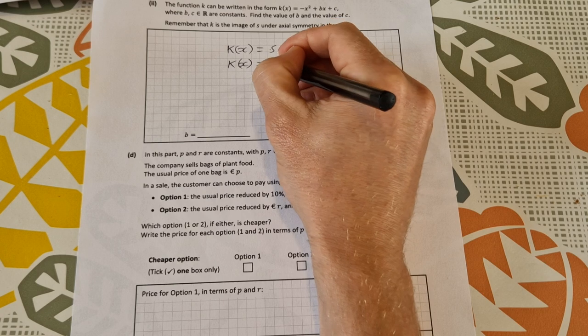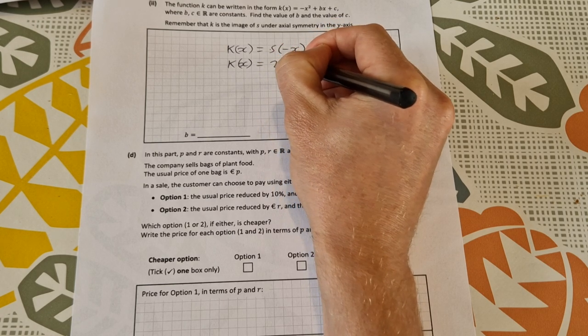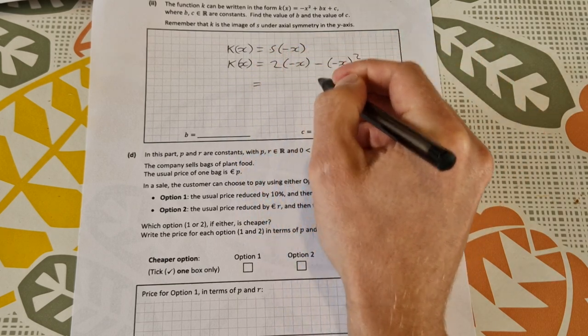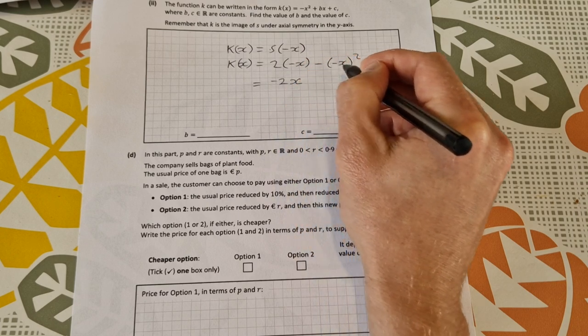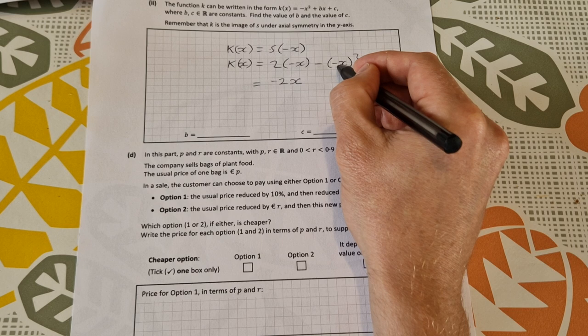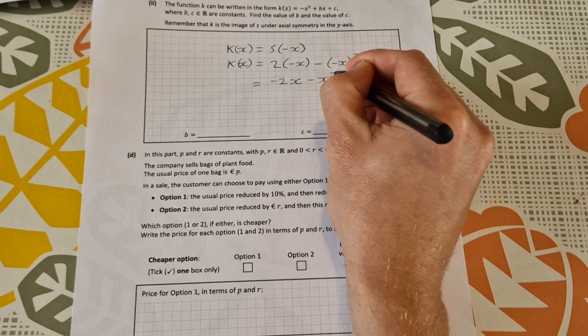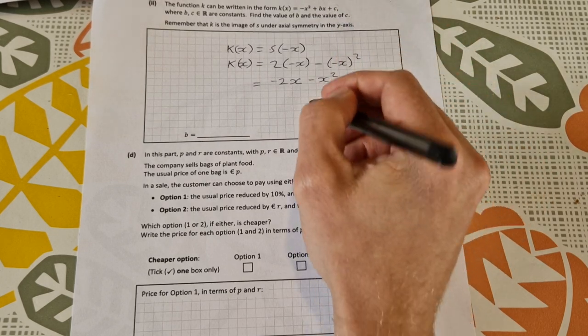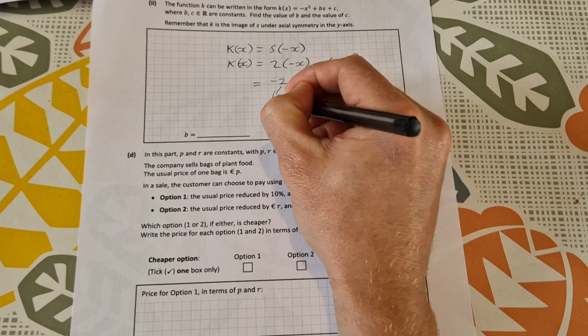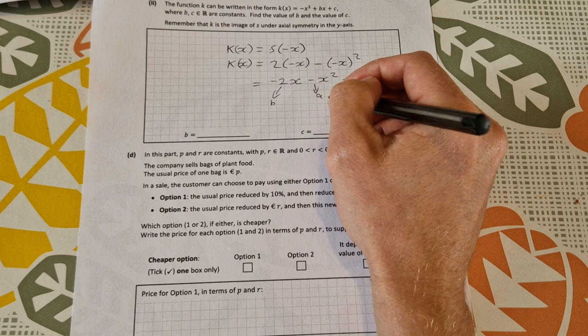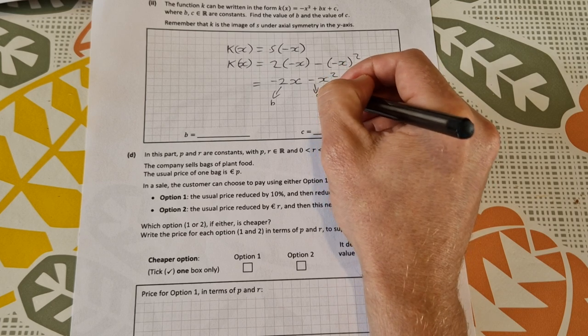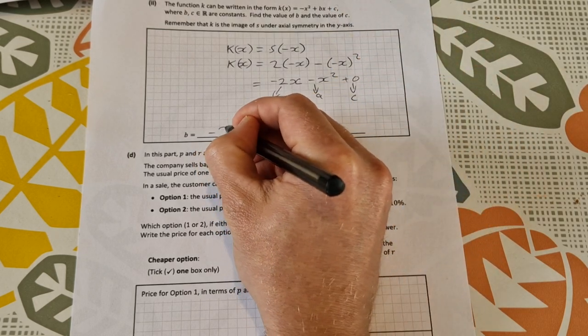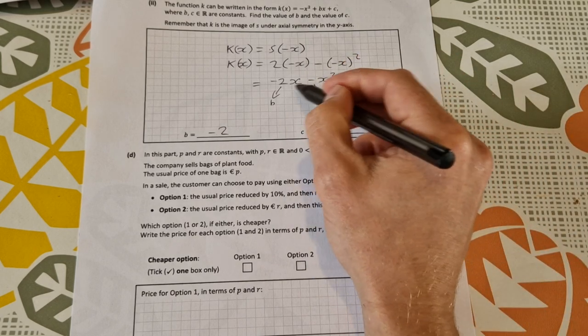So that means k(x) equals s(-x) equals 2 times minus x minus minus x squared. So k(x) equals minus 2x, and then minus by minus, well, square first you get plus, then by minus again you get minus, so that's minus x squared plus zero. Our b is the coefficient of the x, so b is minus 2, and c is zero. Just be careful on that one that you didn't mix up and put in the a like I almost did there.